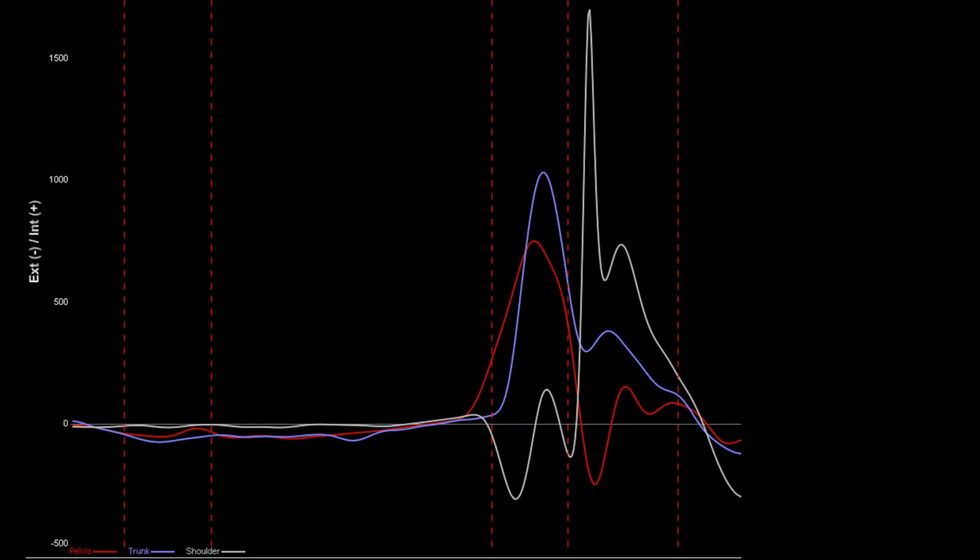If you look at this, the peak angular velocity that occurs first is the pelvis, followed by the trunk, followed by the shoulder.